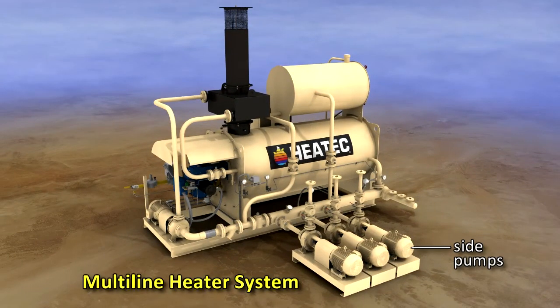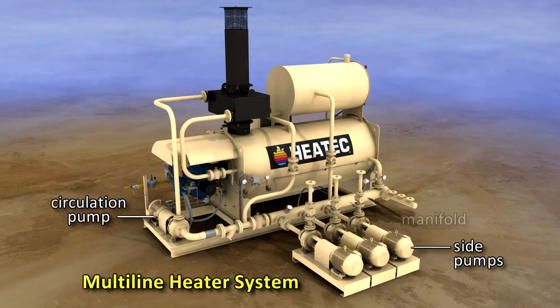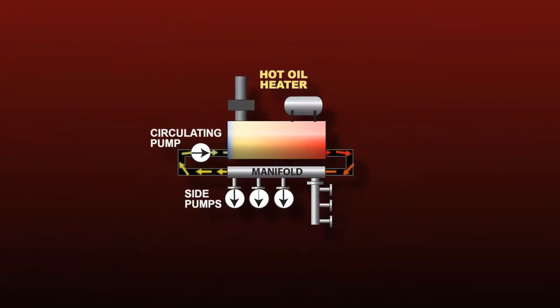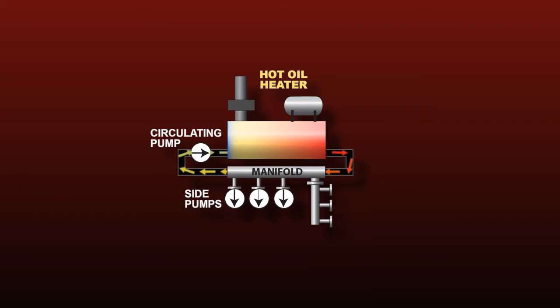A multi-line heater with side pumps overcomes those drawbacks. However, it requires additional pumps, which add to the cost of the system. The multi-line heater has a circulation pump and manifold. The circulation pump serves solely to recirculate the oil through the heater coil, assuring optimal flow of oil through the coil regardless of flow through other components in the system.